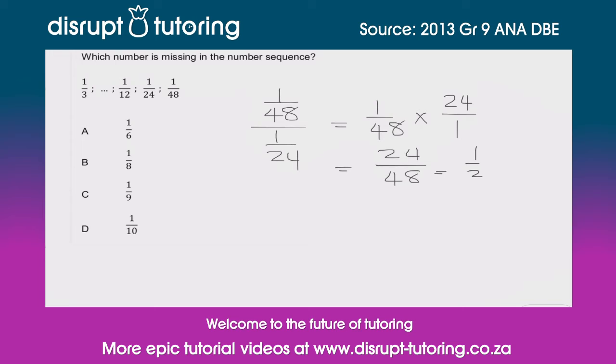Now let's see if I do the same thing with this term and this term whether I get the same result. So I'm going to go 1/24 over 1/12. Again, I can rewrite that as 1/24 times 12/1, and that's going to give me 12/24, which again is 1/2.